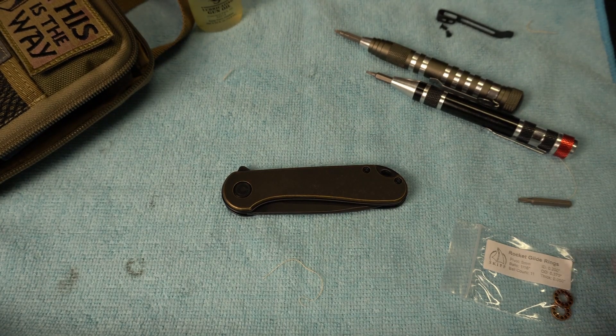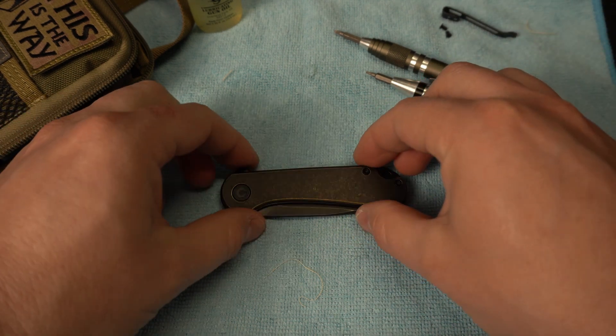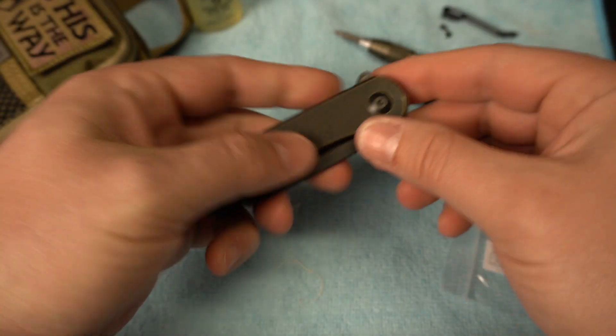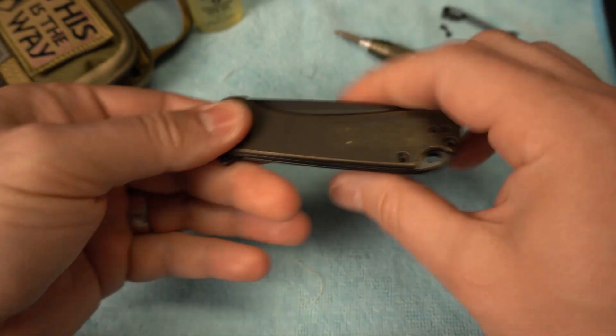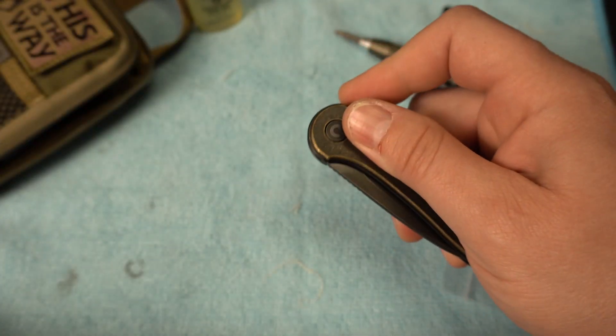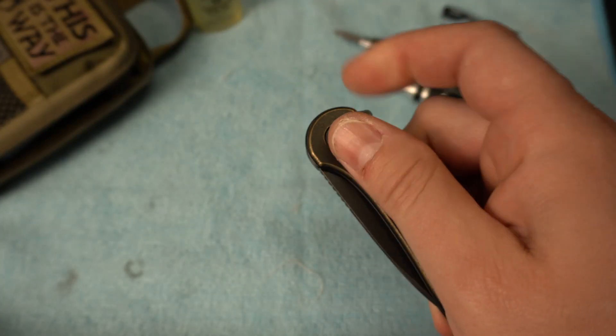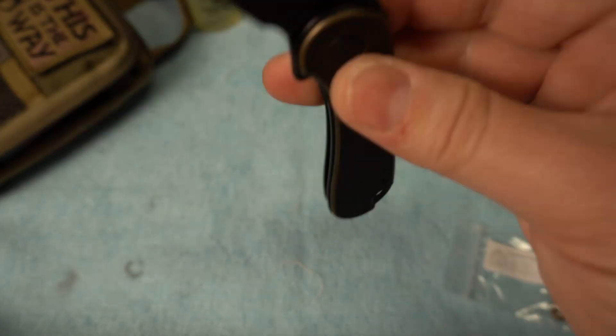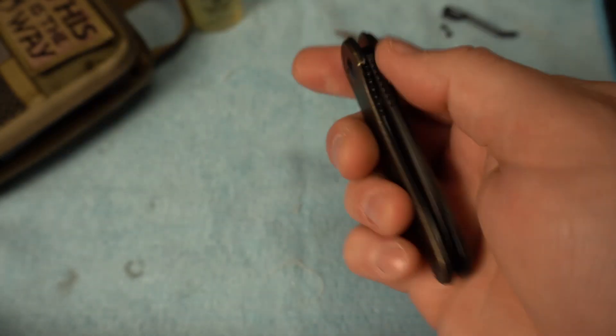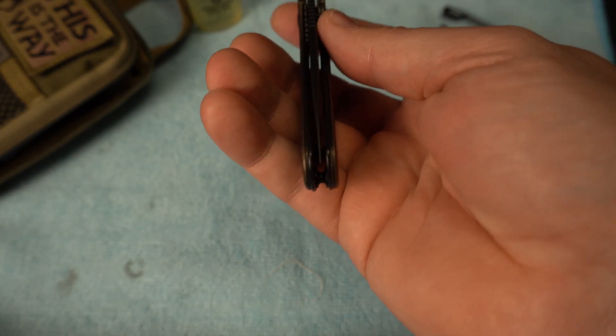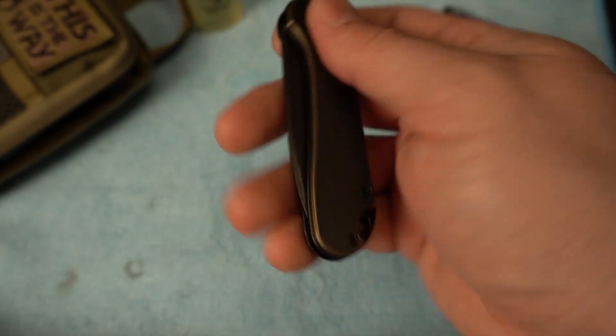Alright guys, I have everything set up here. I went ahead and removed the pocket clip to save time. You're going to need a T8 for all of the hardware to remove the scales and get down into the bearings. As you can see, this is not currently fall shut with the current setup. I did check the tension and it's as loose as I can get it without making it off center.